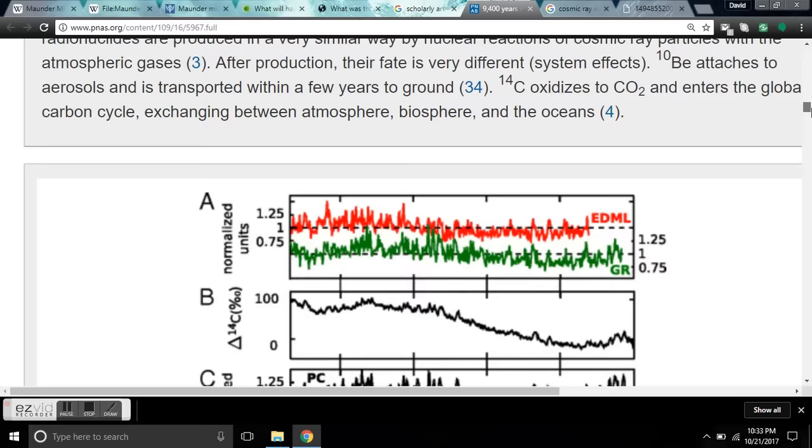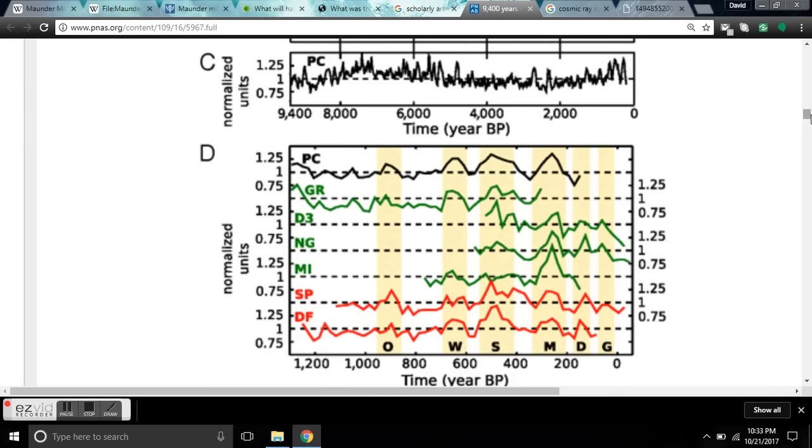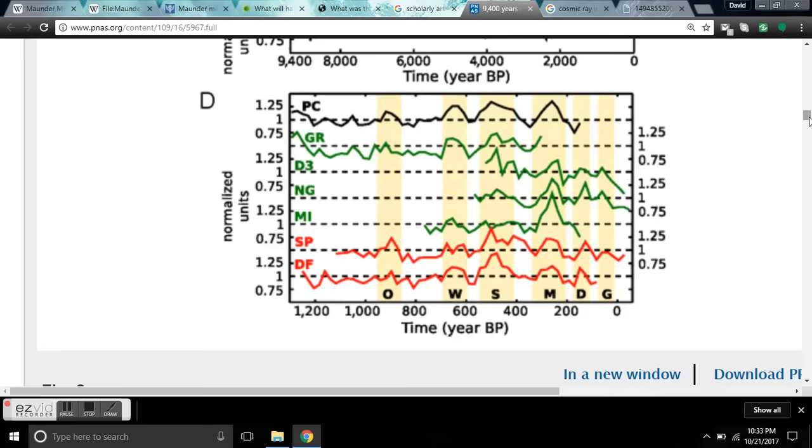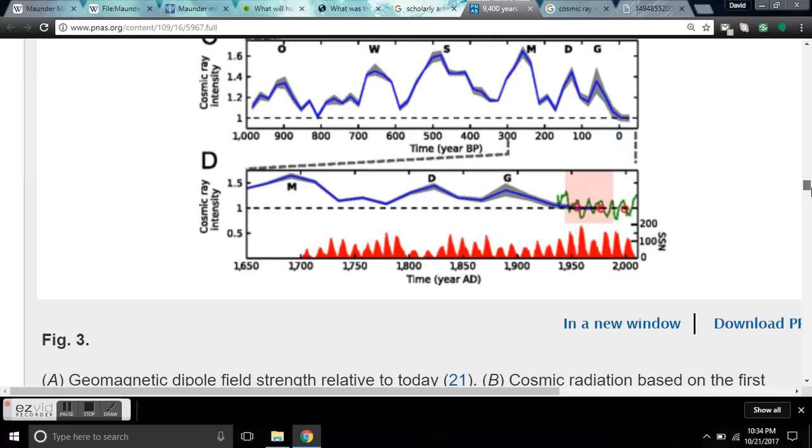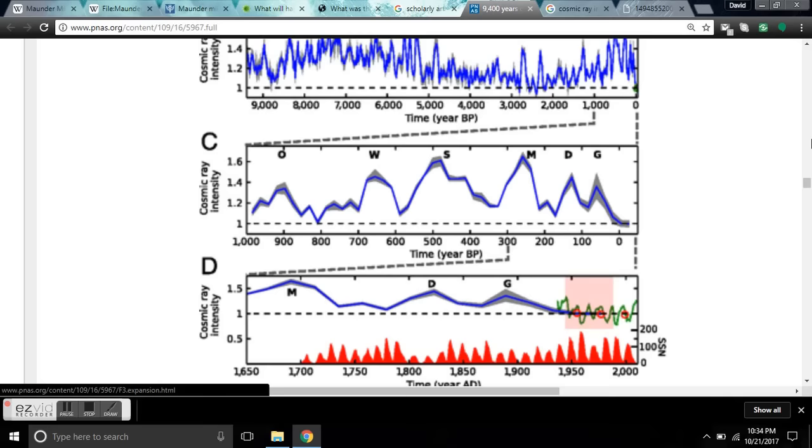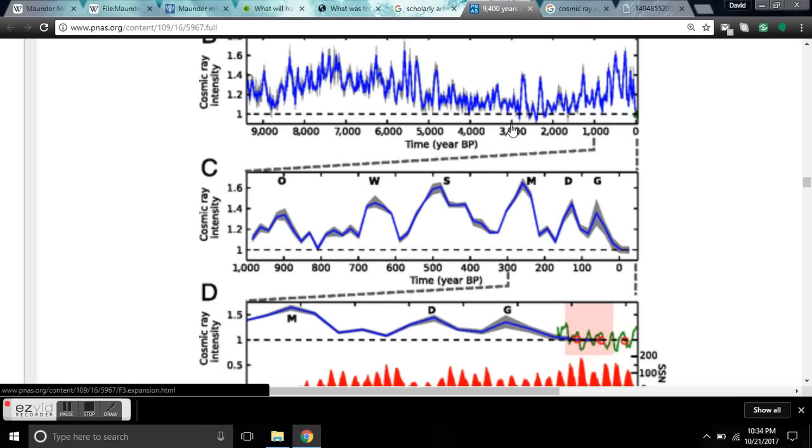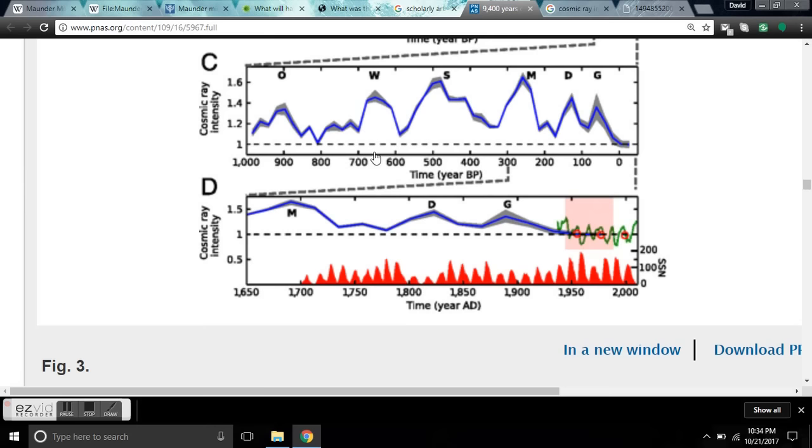So what this data set is showing you, time, years before present, zero, back 10,000 years, to the end of the last ice age there, when sea levels rose during the Great Flood. And I want to show you the amazing correlation here. So here's cosmic ray intensity up here. And there's a smooth graph right below it. And then here. Let's focus in on this graph.